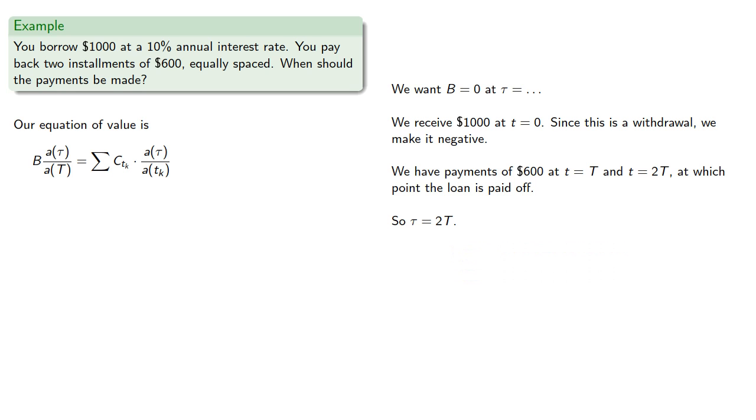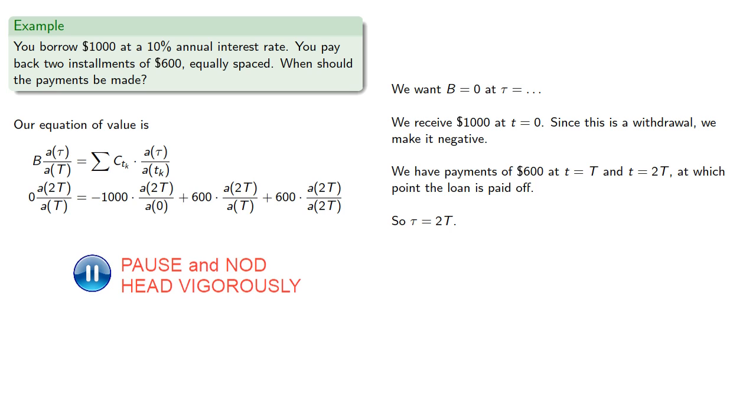So we can fill in t and tau in our expression for the equation of value. And finally, our accumulation function, because it's 10% annual interest, and unless otherwise specified, we'll assume that compound interest is going to be 1.1 to the power of t.